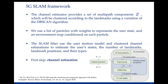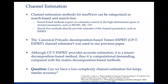The details of the 5G SLAM framework can be found in our paper. As we see, the first step in the framework is channel estimation, which is very important for the framework. Channel estimation can exploit the received signal to estimate multipath components in terms of delays and angles, which can be used in localization and mapping. Channel estimation methods for millimeter wave can be categorized as search-based and search-free. Search-based methods require an exhaustive search in the high-dimensional space of channel parameters, which incurs high complexity — such as MUSIC, maximum likelihood, and compressed sensing techniques.